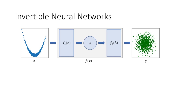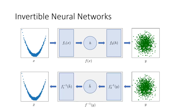In a forward pass, we start from a variable x that we want to encode. That x is fed into a network and we compute a hidden state variable h, then a second network layer inputs h and outputs the final output y. In the inverse pass, since each individual layer is invertible by itself, we can feed y back, compute the inverse of the last layer to recompute h, then input h into the inverse of the first layer to recompute the original input.